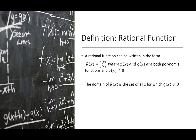A rational function can be written in the form r(x) = p(x) / q(x), where p(x) and q(x) are both polynomial functions and q(x) is not zero. So we really want to start with the domain. The domain of r(x) is the set of all x for which q(x) is not equal to zero — don't divide by zero at any time.